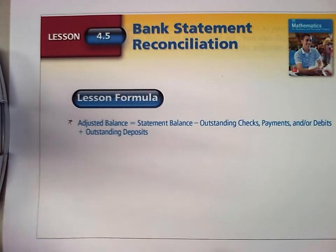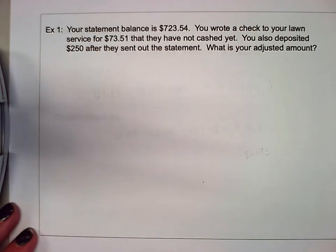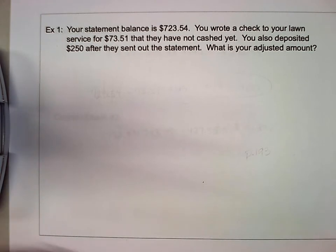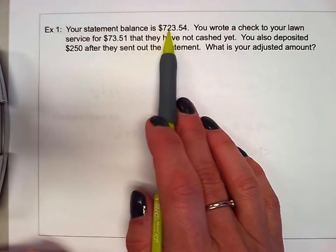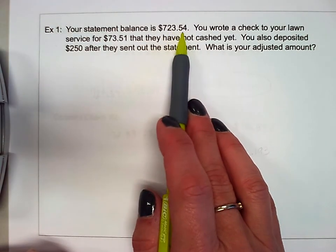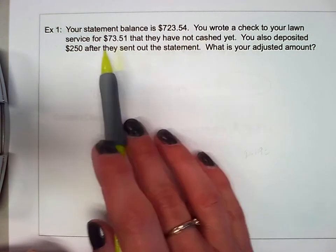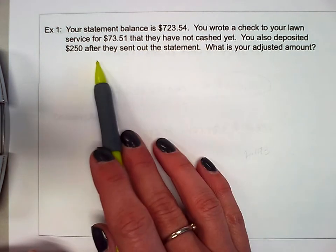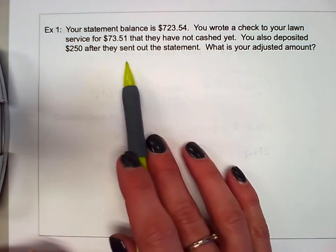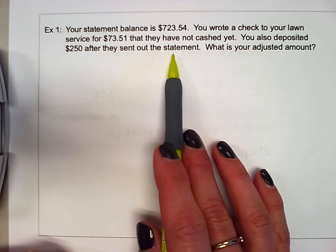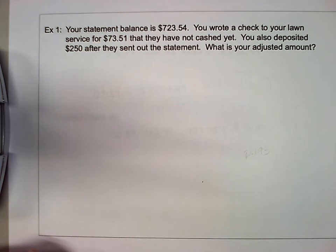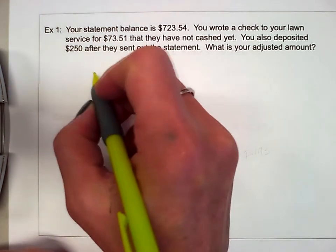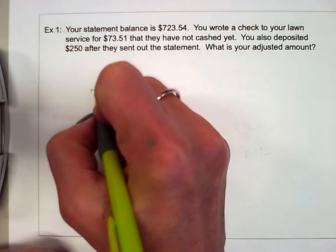Our first example says that we received our bank statement and it showed a statement balance of $723.54. We wrote a check to the lawn service that had not been cashed yet. We also deposited money after they sent out the statement. What is your adjusted amount?